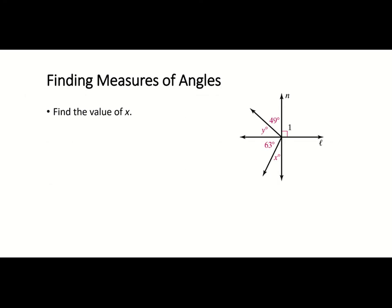Now we'll find the value of x. Because one angle is 90 degrees, x and 63° are complementary — they add up to 90. So x = 90 − 63 = 27 degrees.